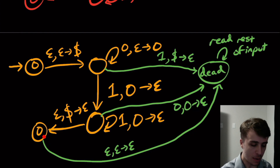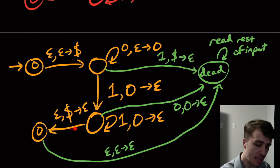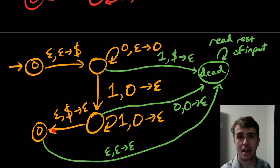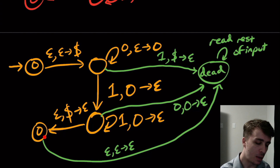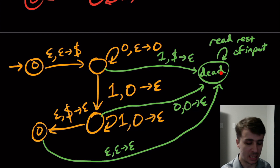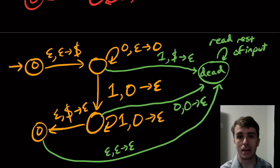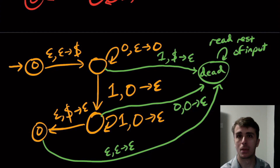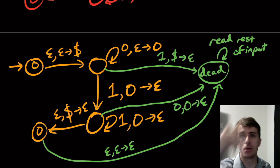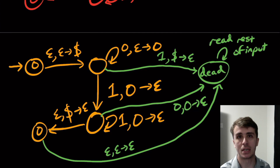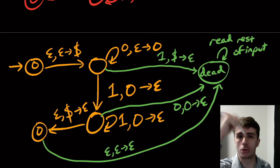If there's anything left on the input after an imperfect match, we go to the dead state and do not accept — which makes sense, because if the zeros and ones didn't match up perfectly and there's anything left on the input, we reject. So that was an example showing that 0^n 1^n is a deterministic context-free language. We have more on DCFLs coming soon — leave your thoughts in the comments, please like and subscribe, and thank you for watching.